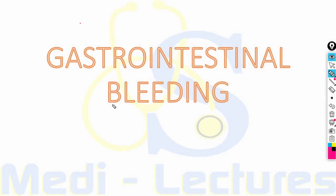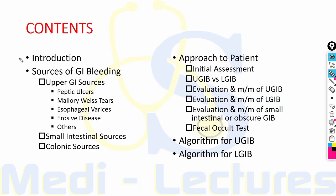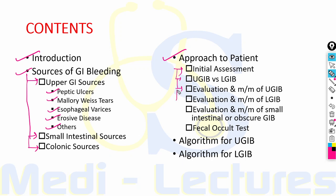Today we will be discussing a very important topic: gastrointestinal bleeding, which is bleeding anywhere from the gastrointestinal tract. First we will look at the introduction, then the various sources of bleeding — divided into upper GI sources including peptic ulcer, Mallory-Weiss tear, esophageal varices, erosive disease, and other causes — small intestinal sources, and finally colonic sources. Then we will discuss how to approach a patient: initial assessment, how to differentiate upper GI versus lower GI, and evaluation and management of upper GI bleed, lower GI bleed, small intestinal and obscure GI bleed, and the fecal occult test.